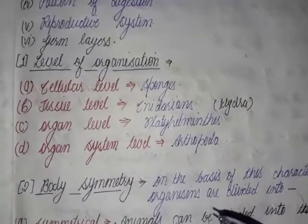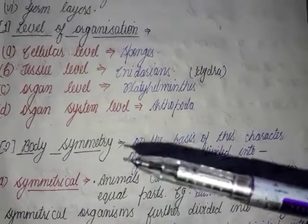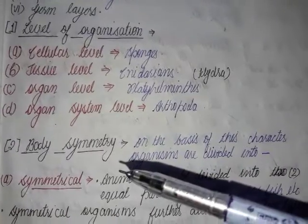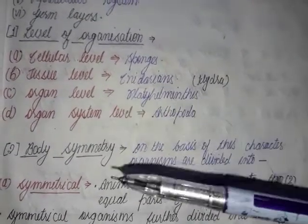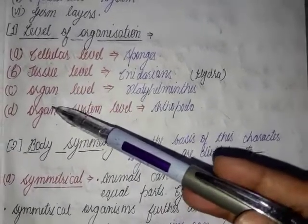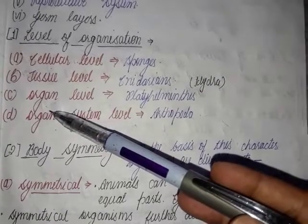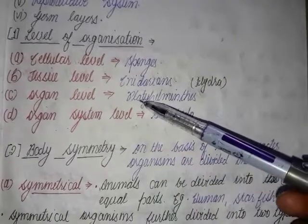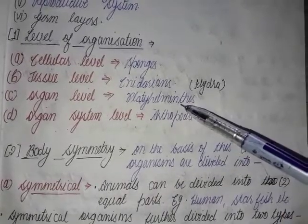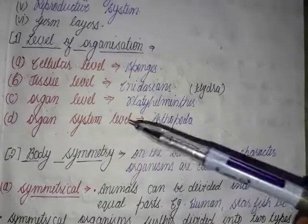Now coming to the organ level of organization. In the organ level, the body is made up of organs. Organs are formed when many tissues aggregate together to form a particular organ. Many organs are found in the body, and all the tissues within one organ are dependent on each other. This type of level is found in Platyhelminthes.